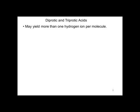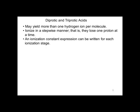Now let's look at diprotic and triprotic acids. They may yield more than one hydrogen ion per molecule. They ionize in a stepwise manner. That is, they lose one proton at a time.